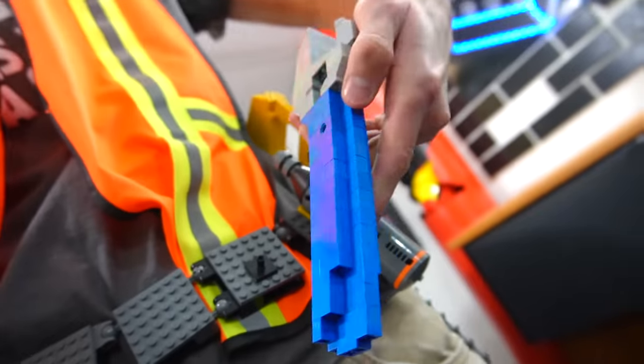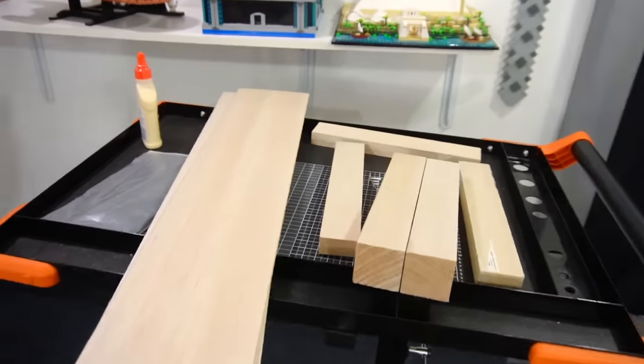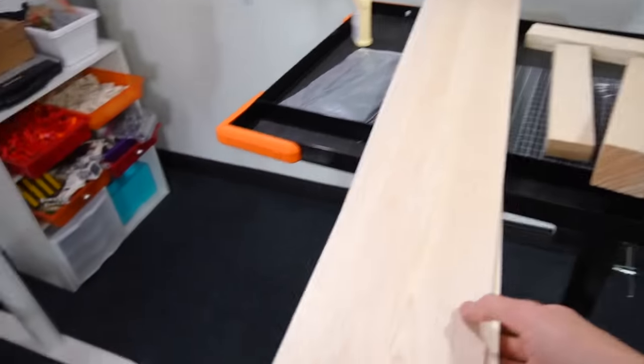We've got little Technic pieces so they can snap on and come off. The wood we're actually going to use for this project is balsa wood, and the reason is because it's really soft and thin.